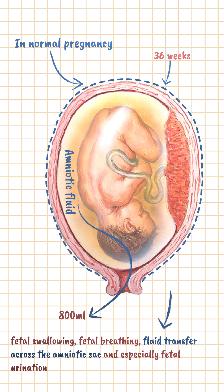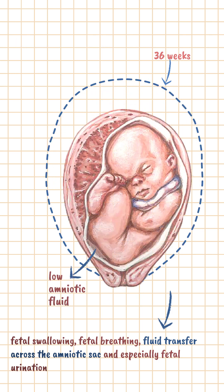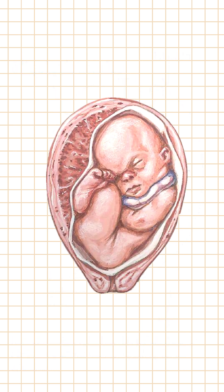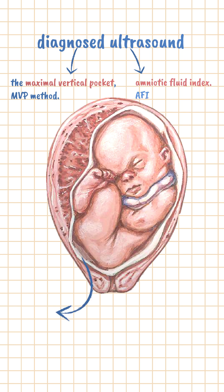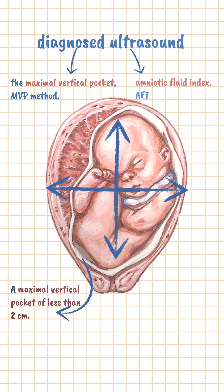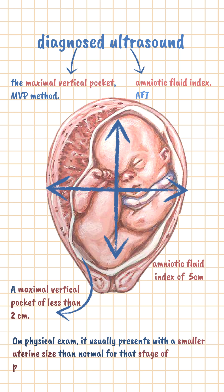Sometimes this amniotic fluid can be reduced — lower than normal. When that happens, we call it oligohydramnios. It's usually diagnosed on ultrasound using either the maximal vertical pocket (MVP) method or the amniotic fluid index (AFI). A maximal vertical pocket of less than 2 centimeters and an AFI of 5 centimeters is the usual diagnostic cutoff. On physical exam, the uterus is actually smaller than expected for that stage of pregnancy.